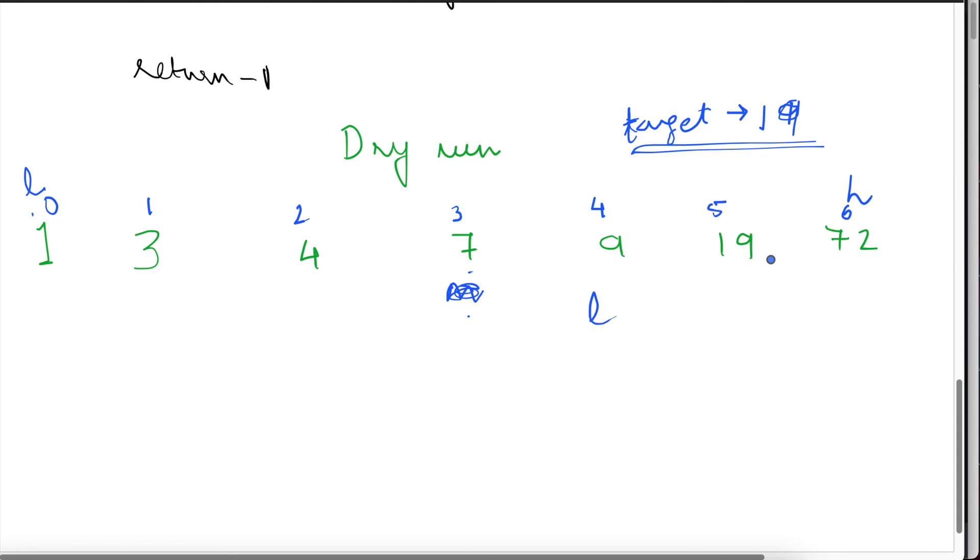Recalculating the mid, 6 plus 4, 10 by 2 is 5. So mid will be over here. So anyway, we have found the required answer. So 19 will be returned. Let's say we change our mid to, let's say we change the target to 4.